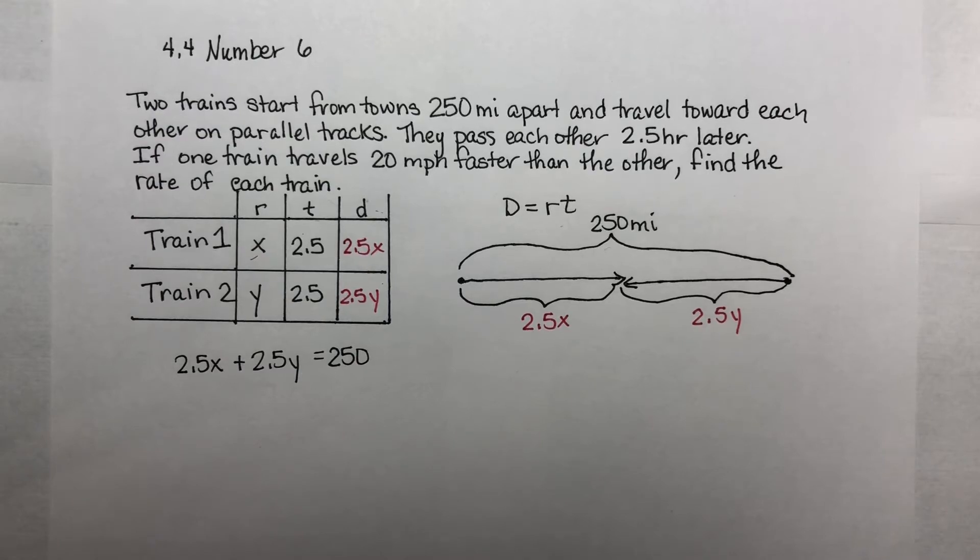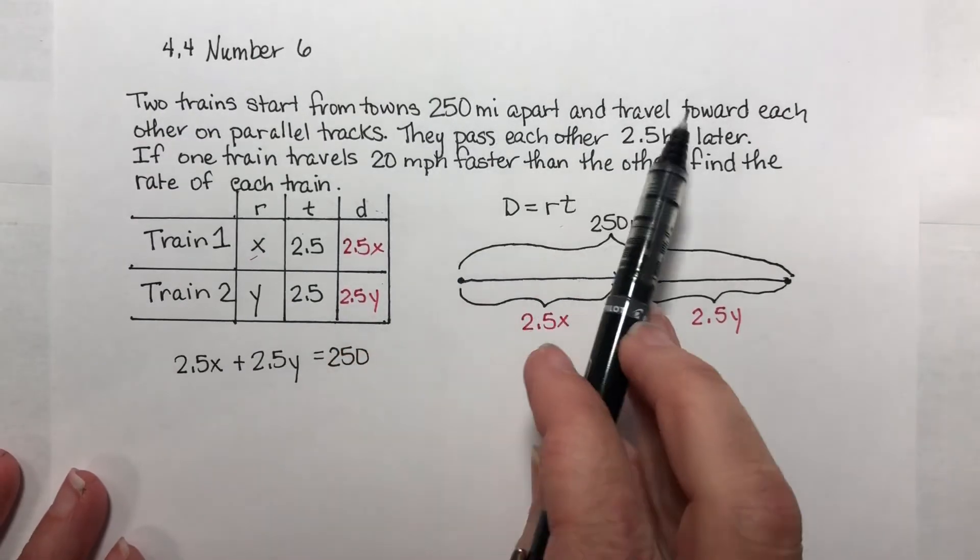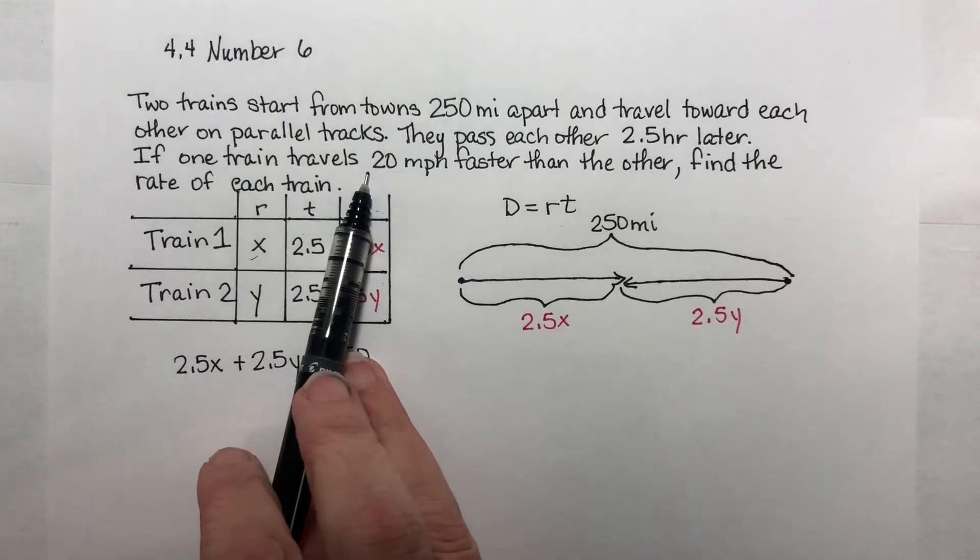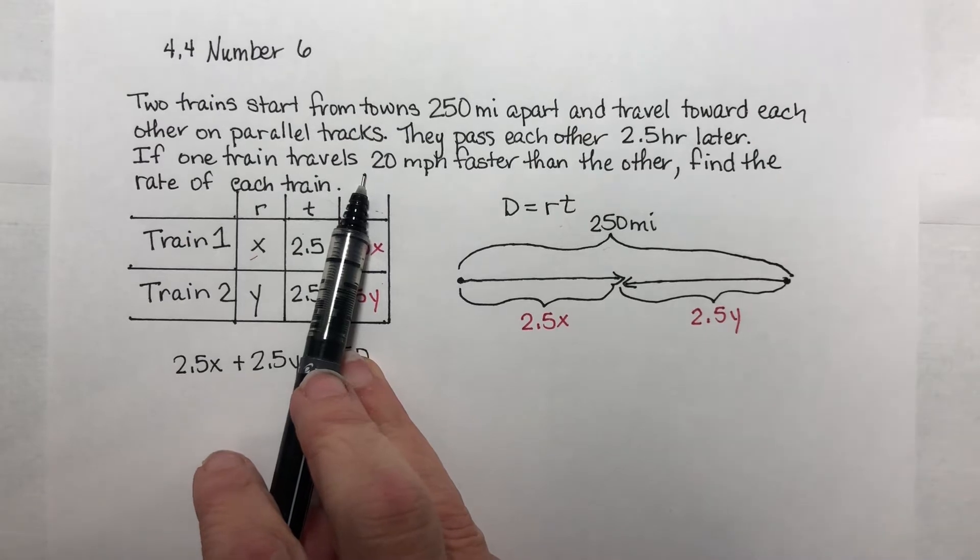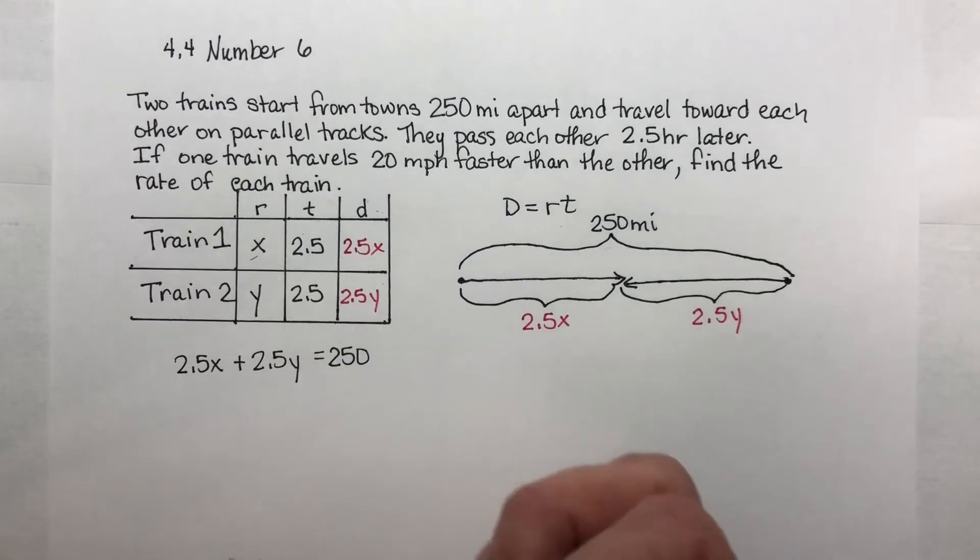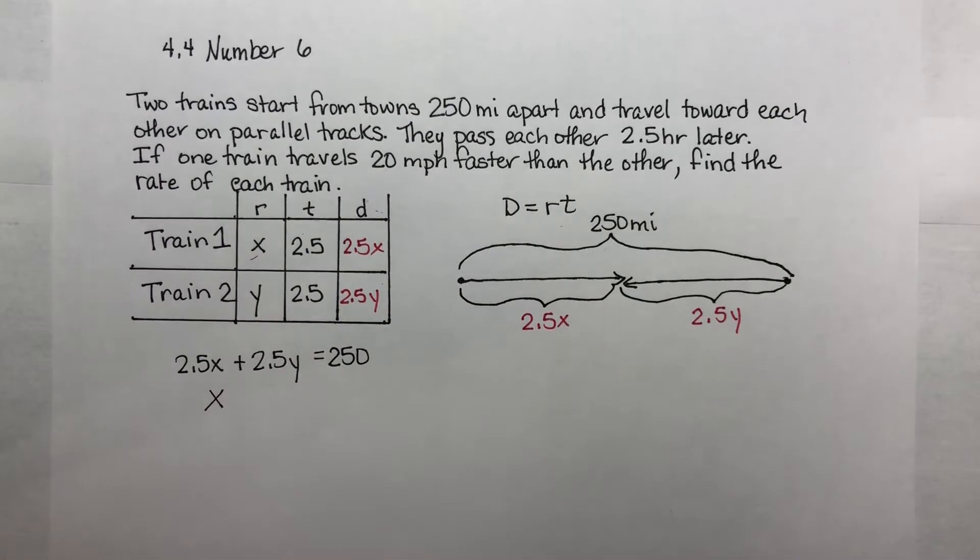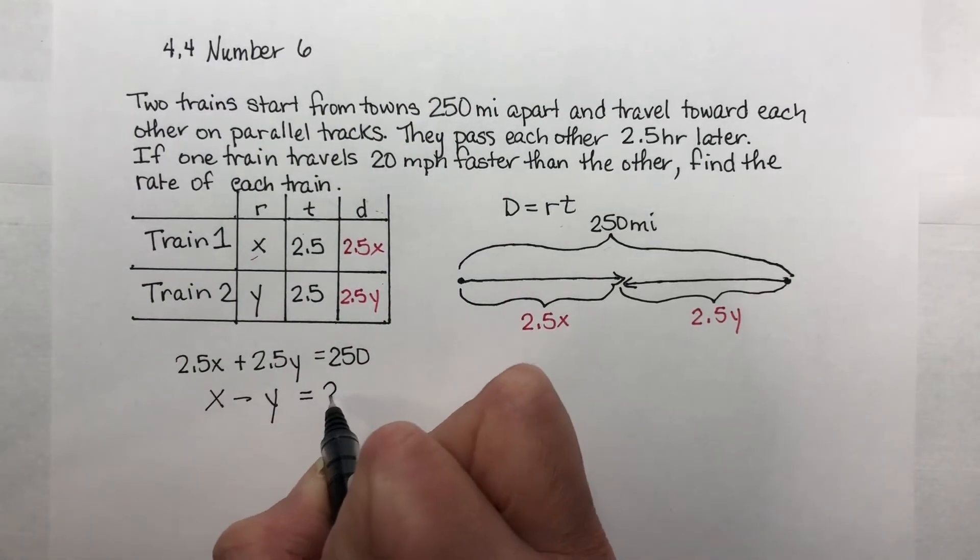So I look for the information I have not used. I have not used that one was faster than the other. Now this particular problem does not tell us which of the two is faster, so it does not matter. If I know that one is faster than the other, one of the things I know is if I subtract the two speeds in what we would call a normal order, meaning the order that does not give you a negative number, if we subtract and one's 20 faster than the other then I should get 20 as my answer. So if I take one train and I subtract the speed of the other train, the difference between them is 20.